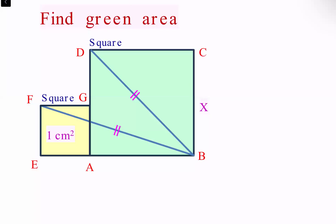Let's see this question. We have two squares and two line segments that are equal in length. The area of the yellow square is 1 centimeter square, and we have to find the area of the green square.